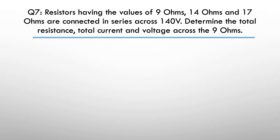Question seven now, we have resistors with the values of 9 Ohms, 14 Ohms and 17 Ohms, respectively, are connected in a series circuit across 140 volts. Determine the total resistance, the total current and just the voltage across the 9 ohm resistor. So pause here. The hint is draw the circuit. I hound this with my students all the time. Don't try and hold the circuit and all the information in your head. Draw the circuit and then work through the circuit.